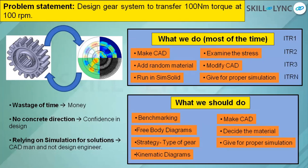After deciding the material, we give it for proper simulation — in ANSYS, HyperMesh, Nastran, or other software. If you design this way, you will always have fewer iterations. It will solve in iteration one or two; it will not go to n number of iterations.